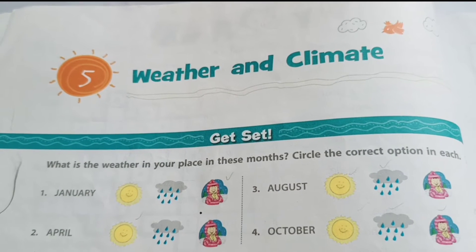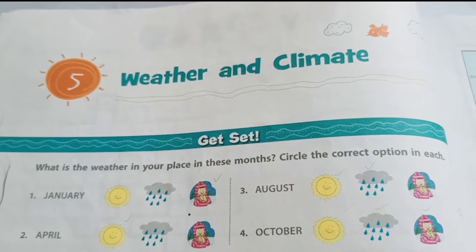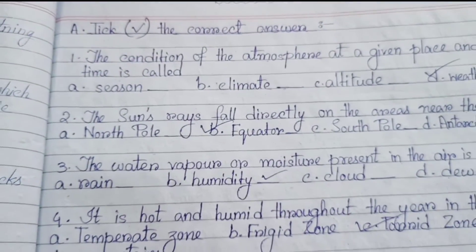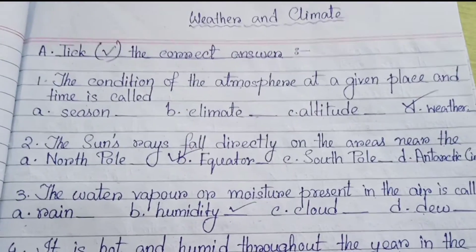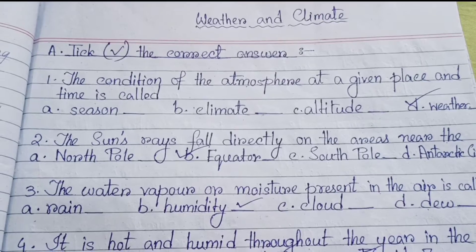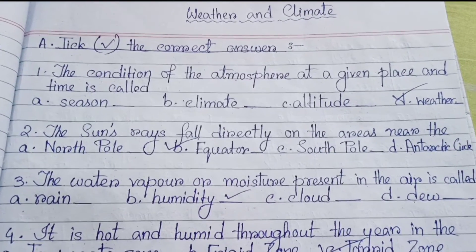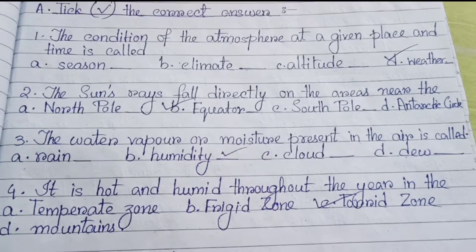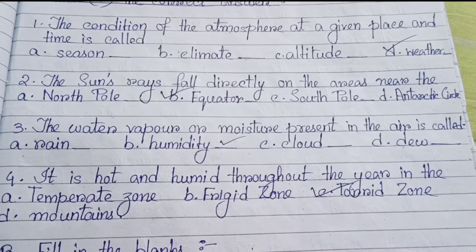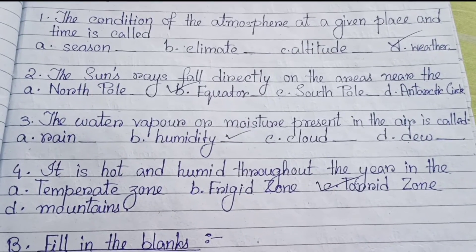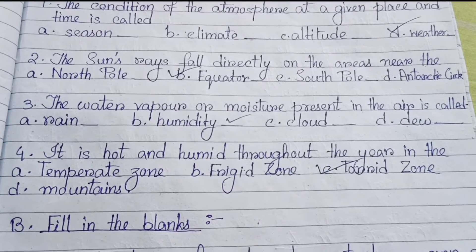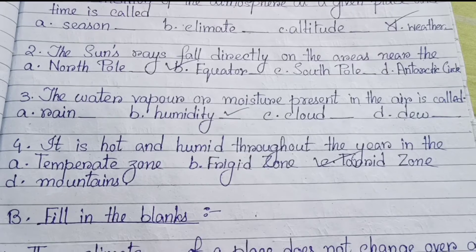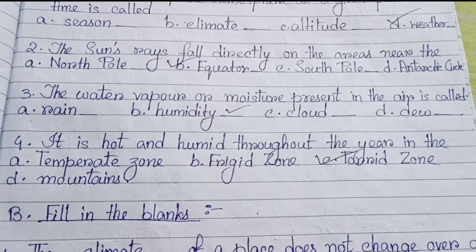Don't skip the video — watch till the end. First we have some objective type question answers from the chapter. Tick the correct answer: Number one, the condition of the atmosphere at a given place and time is called — answer is (d) weather. Number two, the sun's rays fall directly on the areas near the — answer is (b) equator. Number three, the water vapor or moisture present in the air is called — answer is (b) humidity.